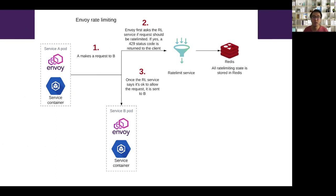This is a chart of Envoy rate-limiting showing the request flow of service A making a request to service B. Starting at step 1: A makes a request to B, and service A has an Envoy sidecar. The Envoy sidecar asks the rate-limit service whether to rate-limit this request. If the answer is yes, a 429 status code is returned to the service A container. Otherwise, the request is let through and A successfully makes a request to B. The rate-limit service stores all the request count information in a Redis cache.